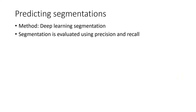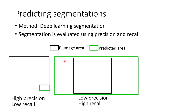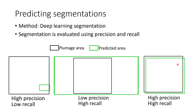During model training, two metrics — precision and recall — are used in evaluation. Precision is the proportion of the predicted area that falls inside the plumage area. Recall is the proportion of the plumage area that falls inside the predicted area. A good segmentation has both high precision and recall.